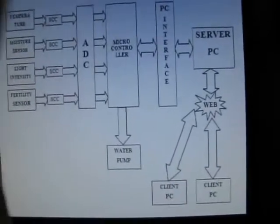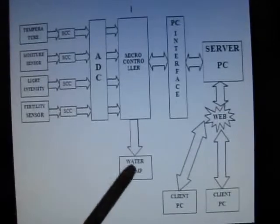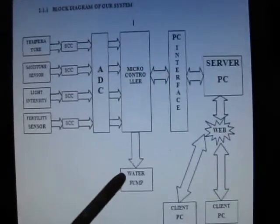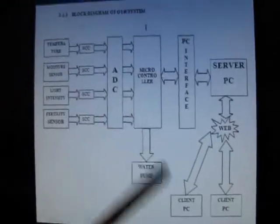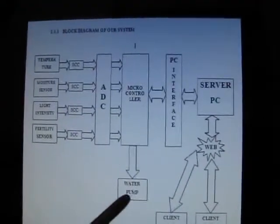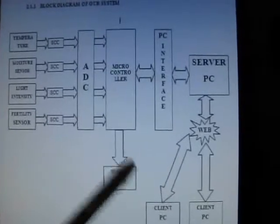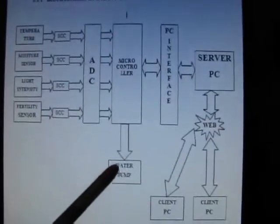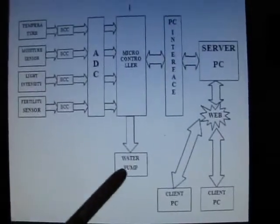Now we are making this entire system a closed loop by using a water pump. The purpose of using a water pump is: when the process variable is less than the set point value, the water pump will be activated. When the process variable is greater than the set point value, the water pump will be switched off, making this entire system a closed loop system.